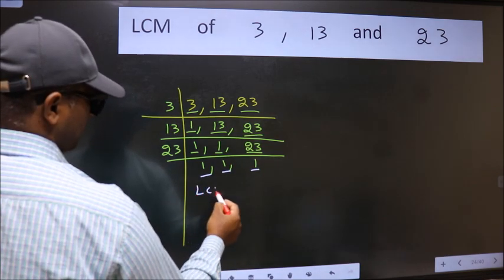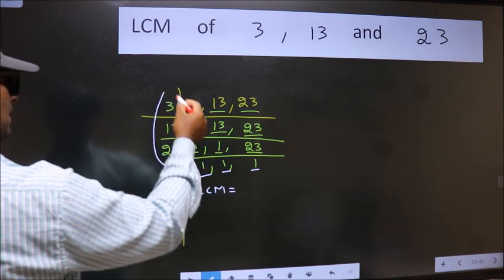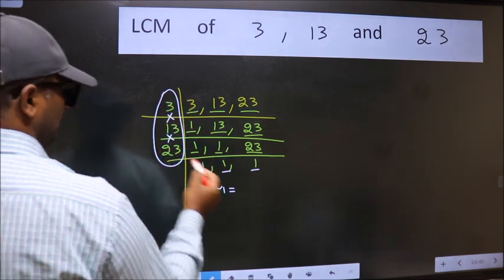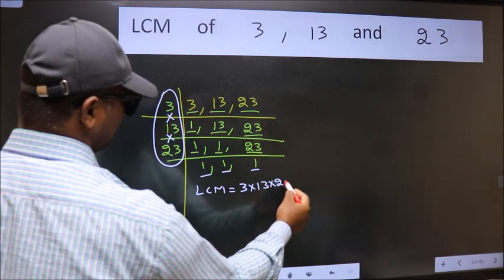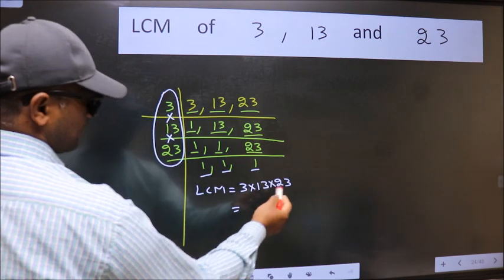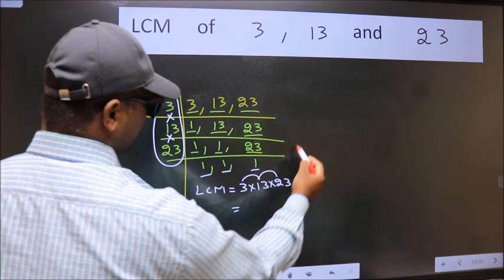So our LCM is the product of these numbers, that is 3 into 13 into 23. Let us multiply these numbers. 3 into 13, 39 into 23.